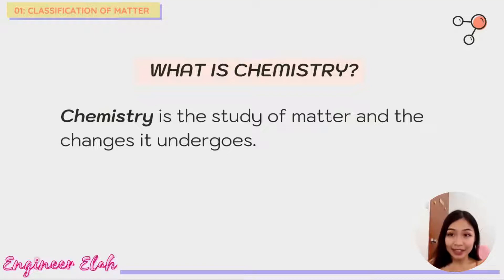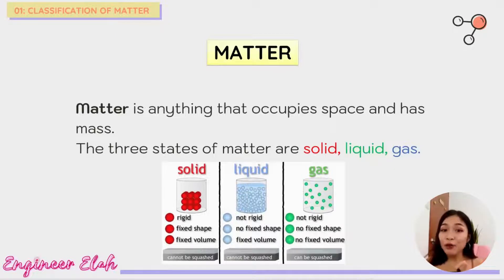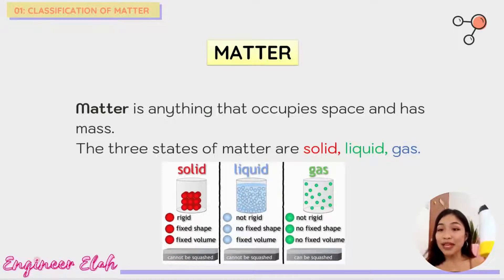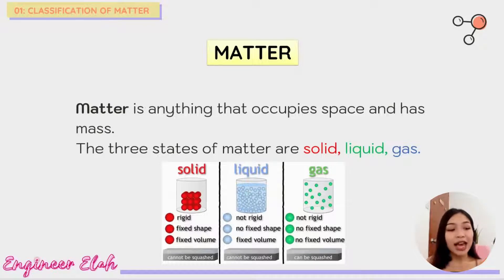So what is matter? Matter is anything that occupies space and has mass, meaning it has volume and weight. For example, this tumbler — it has space, it carries a certain amount of water and it has weight. So this is considered as matter. And almost everything that you see in your surroundings is matter.